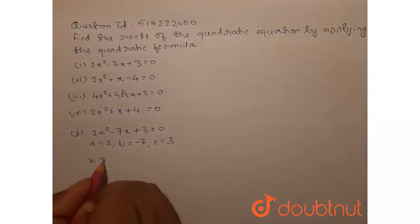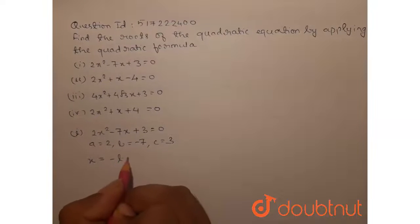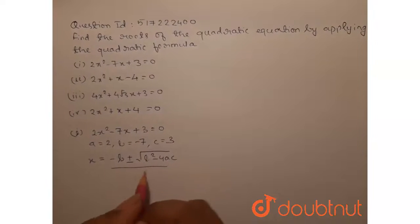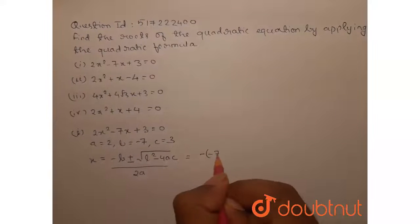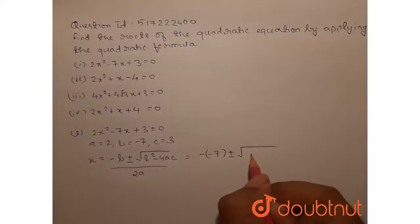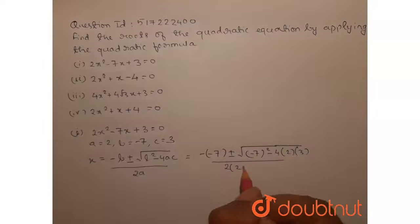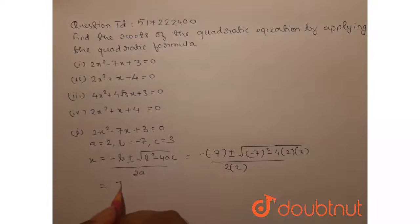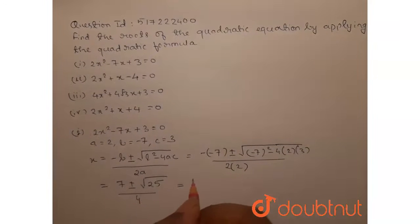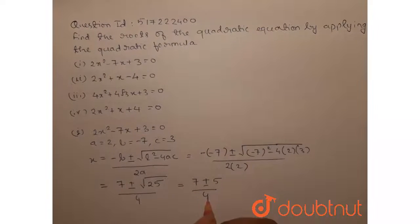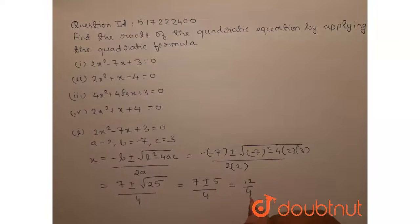From the quadratic formula, the roots of the equation are given by minus b plus or minus root of b squared minus 4ac, all divided by 2a. This equals minus of minus 7 plus or minus root of b squared minus 4ac by 2a, which simplifies to 7 plus or minus root 25, all over 4. So the roots are given by 7 plus or minus 5, over 4, which gives 12 by 4 and 2 by 4.